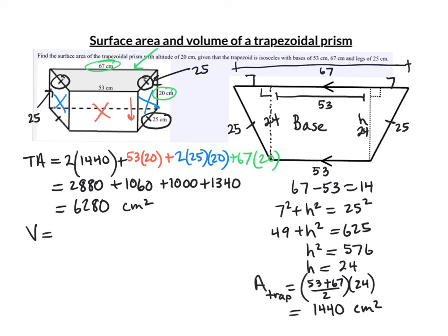The volume is just the area of the base times the height. Remember the base was the trapezoid. So the area of the base is 1,440 times the height. The height is the altitude of the prism. It's the distance between the trapezoid.